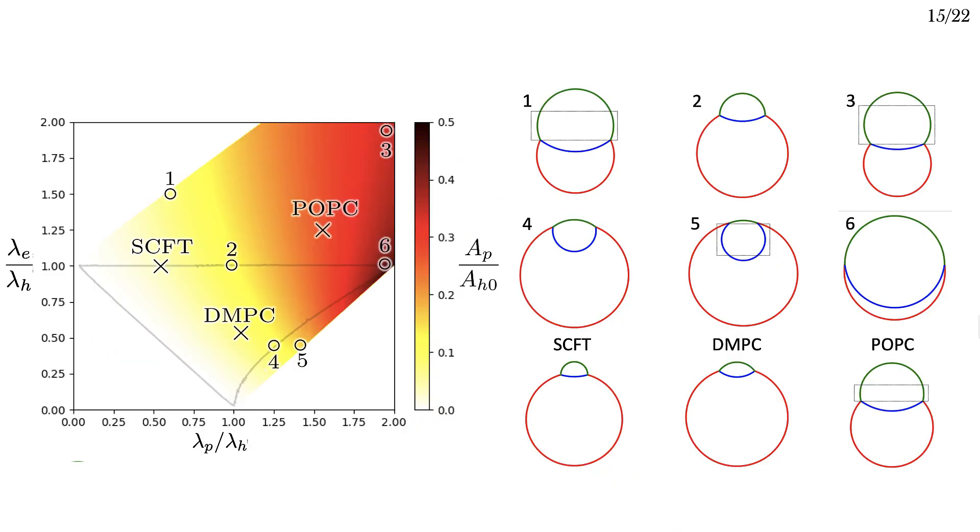Here I've plotted the size of the force-free geometries in terms of lambda e and lambda p. The size is given as a fraction of the bare HD size, and this area ratio only goes up to 0.5.